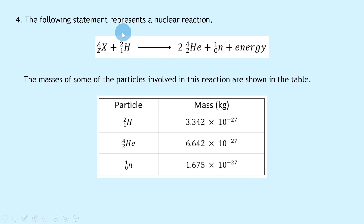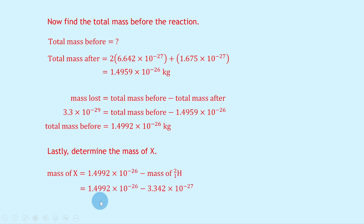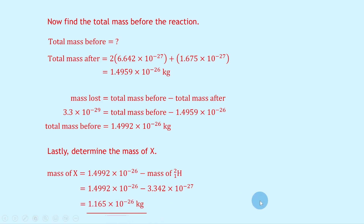We now have the total mass before the reaction, but we want just the mass of element X (lithium). We subtract the mass of the hydrogen particle: mass of X = 1.4992×10⁻²⁶ − 3.342×10⁻²⁷, giving 1.165×10⁻²⁶ kilograms. That's all for this video — thanks for watching! Make sure to give the video a like, subscribe to the channel, and I'll see you in the next one.